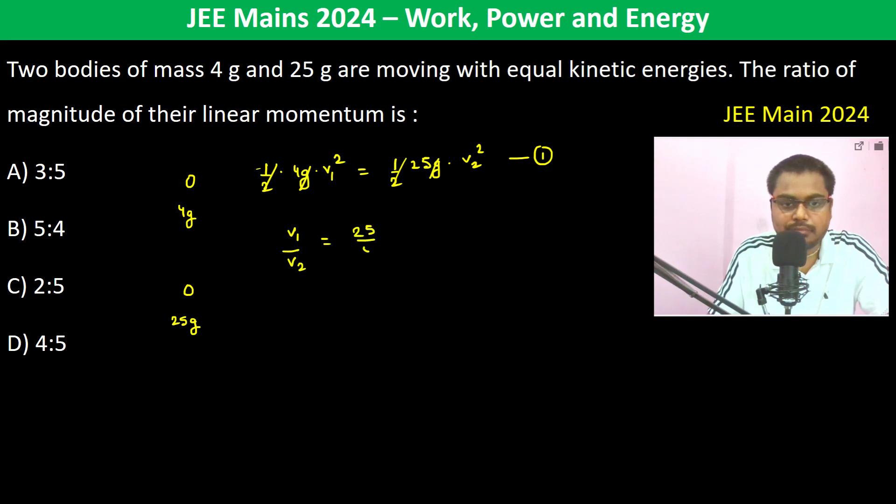much? 25 by 4 root, which is 5 upon 2. So now magnitude of their linear momentum, so therefore 4 gram into V1, this is M1V1, divided by 25 gram into V2, which is M2V2, so 4